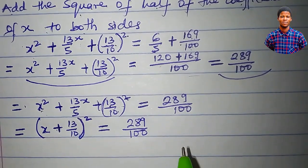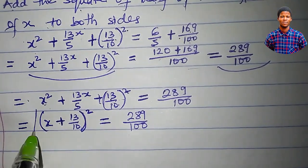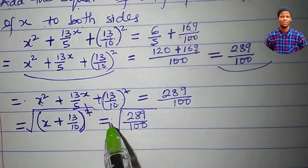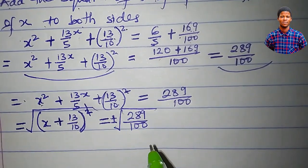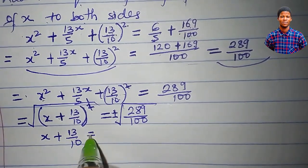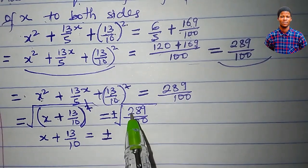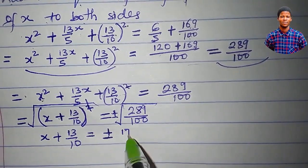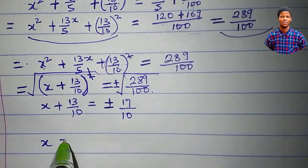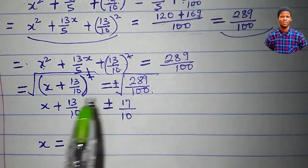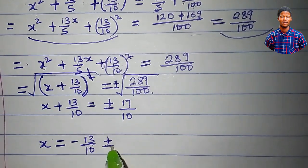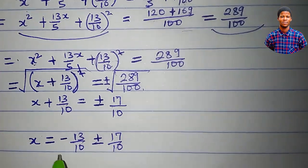We have to eliminate this square by taking the square root of both sides. The square will cancel the square root. Remember, square root is plus or minus. So we have x plus 13 over 10 is equal to plus or minus — the square root of 289 is 17, and the square root of 100 is 10. So x is equal to, moving 13 over 10 to the other side, it becomes minus 13 over 10, plus or minus 17 over 10.